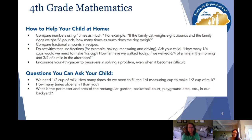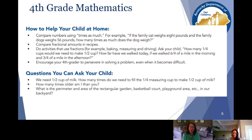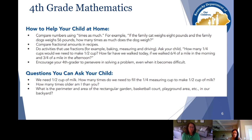You'll have all those pieces we described, and to get a bit more specific, let's look at some of the pieces in how to help your child at home. You'll notice there are only about four bullets under those examples, but they give parents an idea of ways they might approach helping their child at home. For instance, compare numbers using 'times as much' — like if the family cat weighs eight pounds and the family dog weighs 56 pounds, how many times as much does the dog weigh?